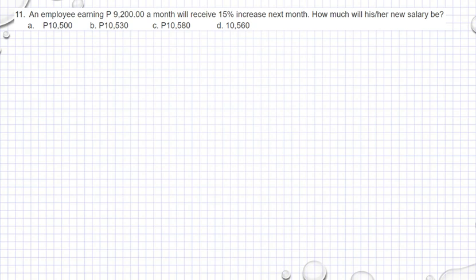Number 11. An employee earning 9,200 pesos a month will receive 15 percent increase next month. How much will his or her new salary be? That means from 100 percent it will increase 15 percent, and you have 115 percent.